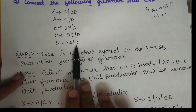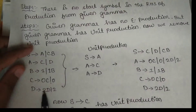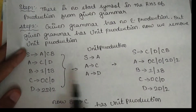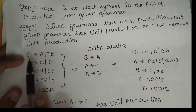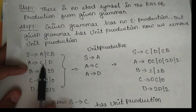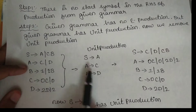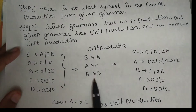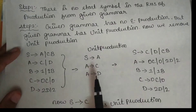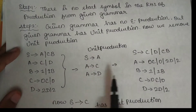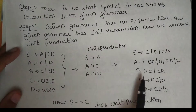But there are unit productions. What is a unit production? For example, S to A, A to C, A to D — all of these are unit productions. So what do we do? We remove the unit productions.